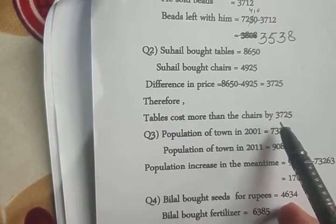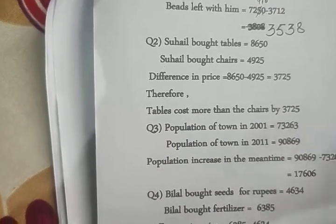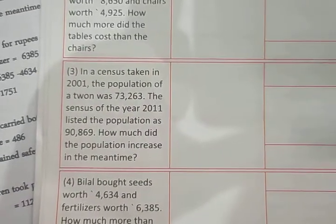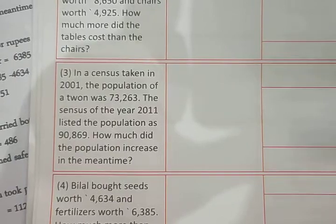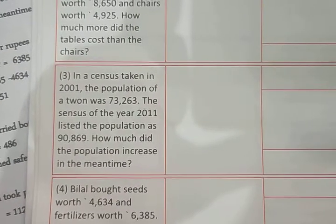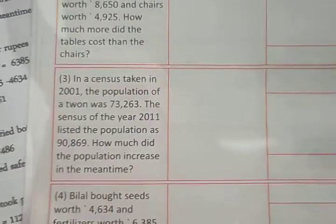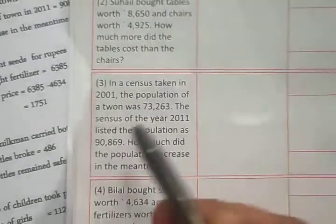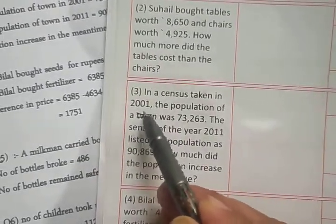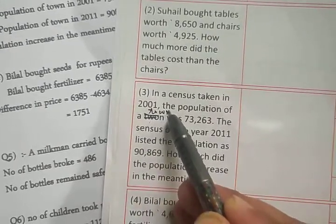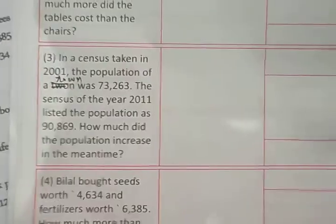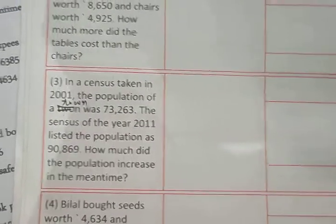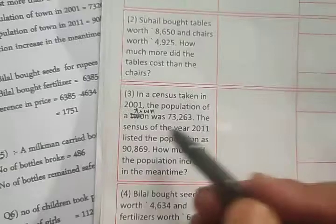Our next question: in a census taken in 2001, the population of a town — note the spelling of 'town' is incorrect in the book, so first we correct the spelling: T-O-W-N — the population of the town was 73263.